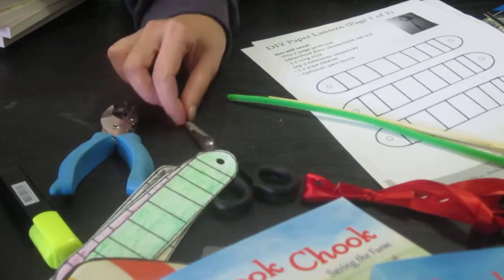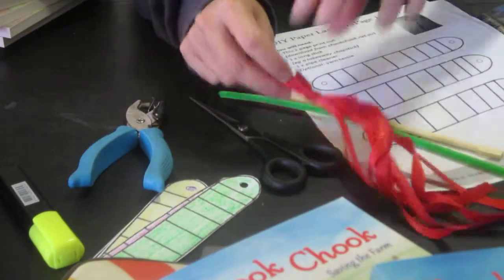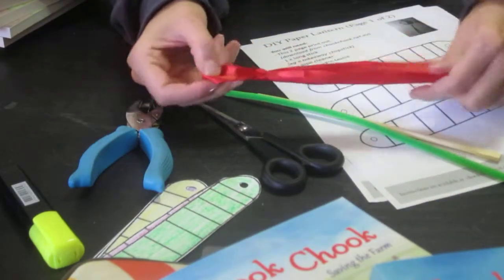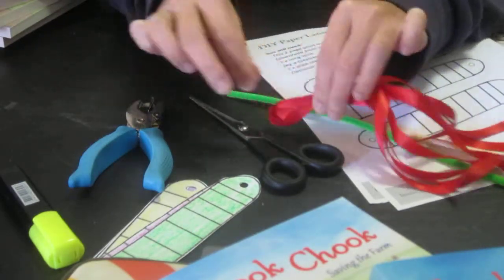You'll need scissors and a hole punch just to be able to cut your pages out. And you can create an optional tassel. You'll see I've done it here with just pieces of ribbon that I've folded in half, and then tied an extra bit of ribbon around.